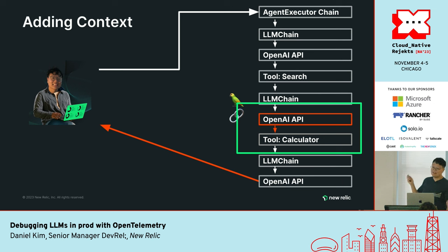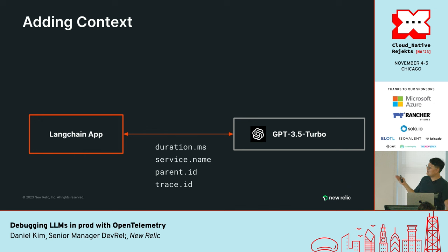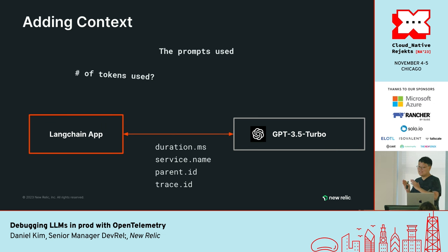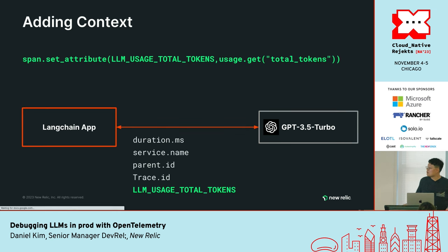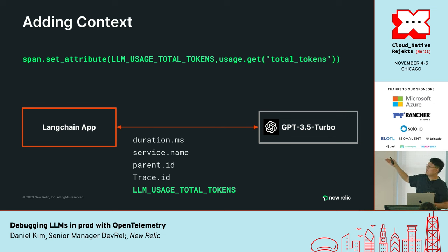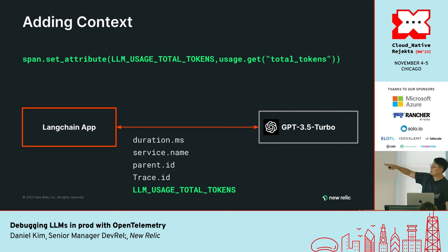So let's leverage Python manual instrumentation to add more context to the particular trace. With automatic instrumentation you get a couple of things out of the box — the service name, the parent ID, the trace ID, and the duration. You basically get how long it took and who it called, but not much else. But let's say I want to know how many tokens this particular call used, or what was the prompt you actually inserted into GPT-3.5 to get the wrong answer, or the specific temperature the LLM is tuned to. With manual instrumentation all you have to do is set the span attribute to be the particular thing you want to measure, and then get that value from the API call returned by your LLM.